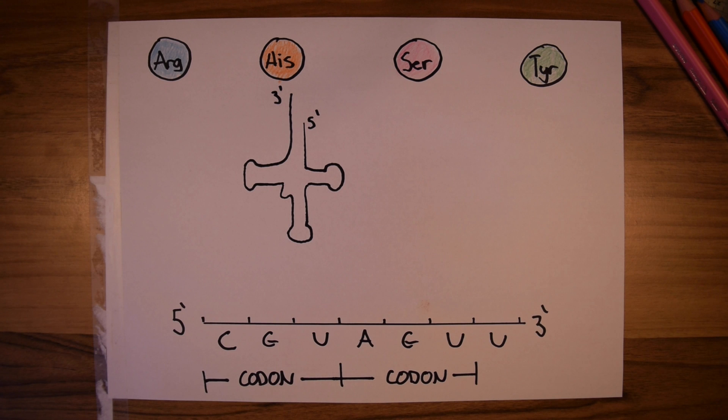Every three bases on the mRNA is known as a codon, and what the tRNA does is it matches these codons with their corresponding amino acid. By doing this multiple times with the aid of a ribosome, a protein is translated.